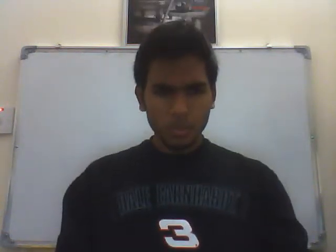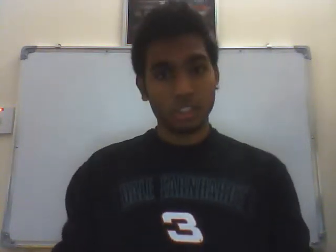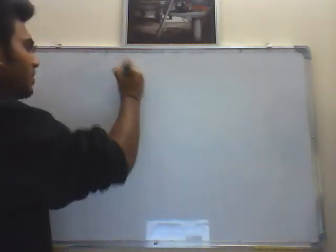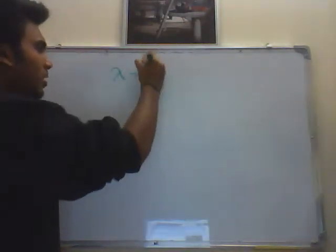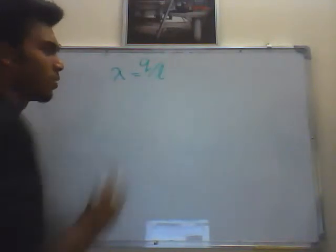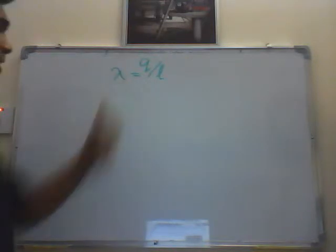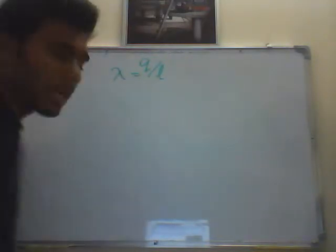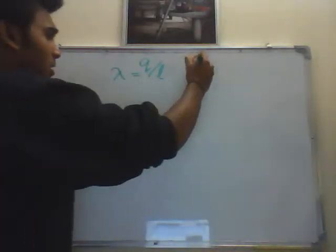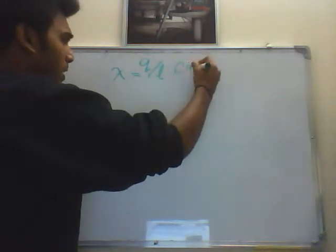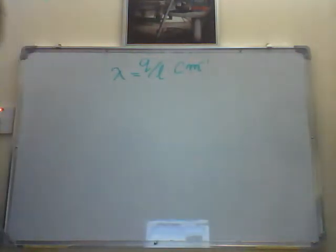So we spoke about linear charge density. It's lambda equal to q by L. If we have a line of charge, the linear charge density is the total charge divided by the length, and the unit is coulomb per meter.